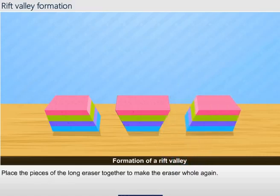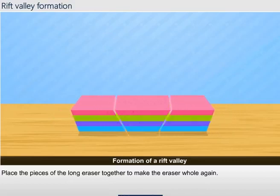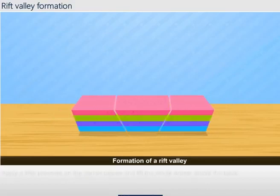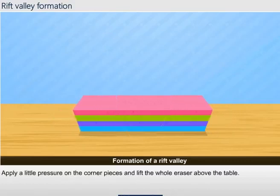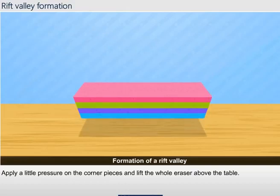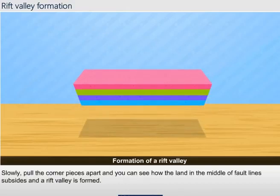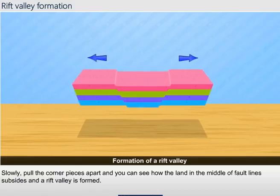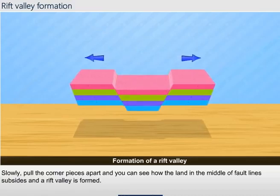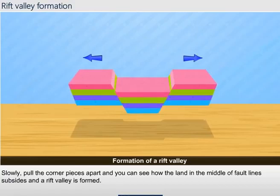Place the pieces of the long eraser together to make the eraser whole again. Apply a little pressure on the corner pieces and lift the whole eraser above the table. Slowly pull the corner pieces apart and you can see how the land in the middle of fault lines subsides and a rift valley is formed.